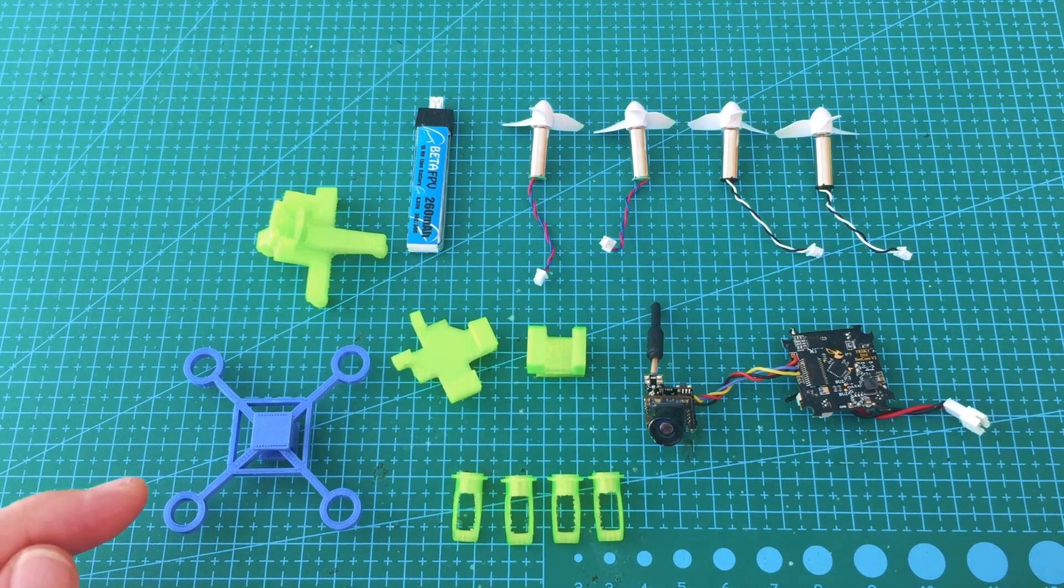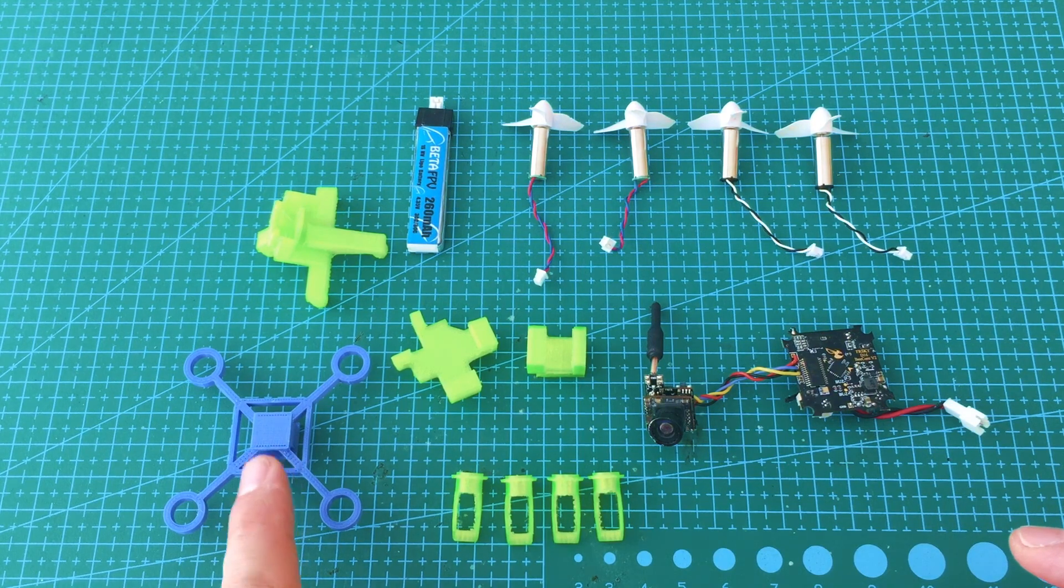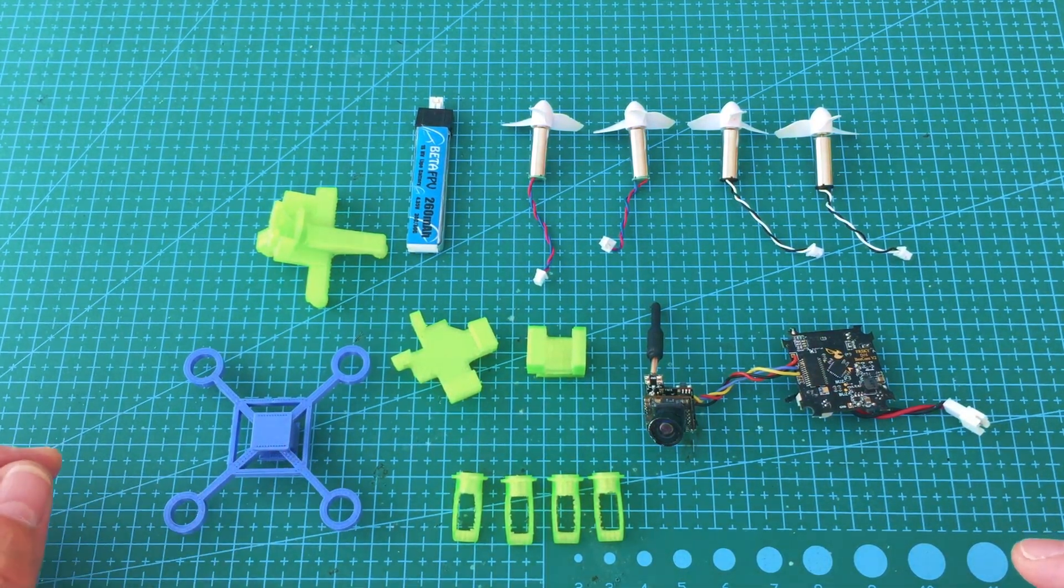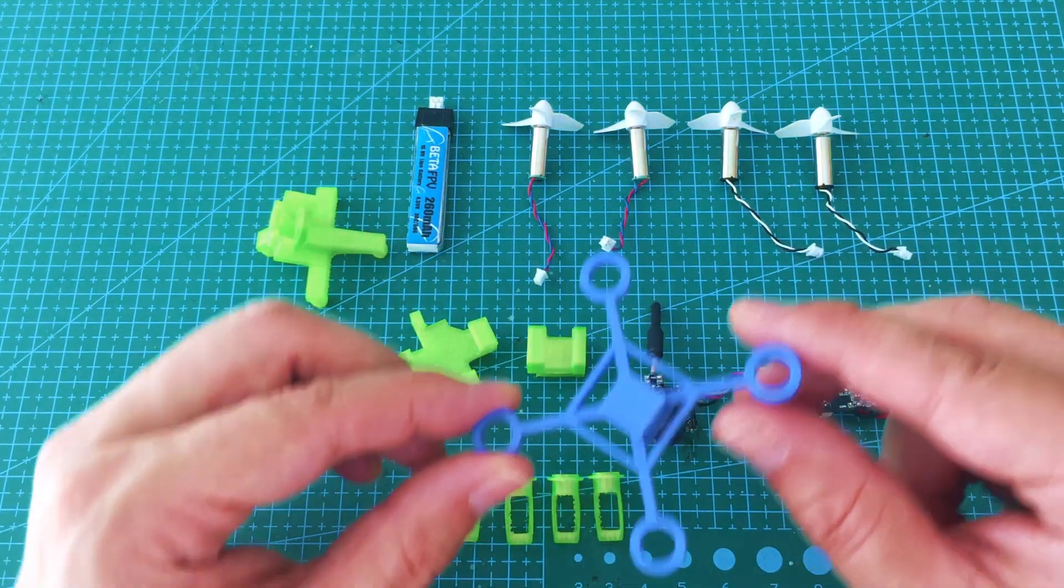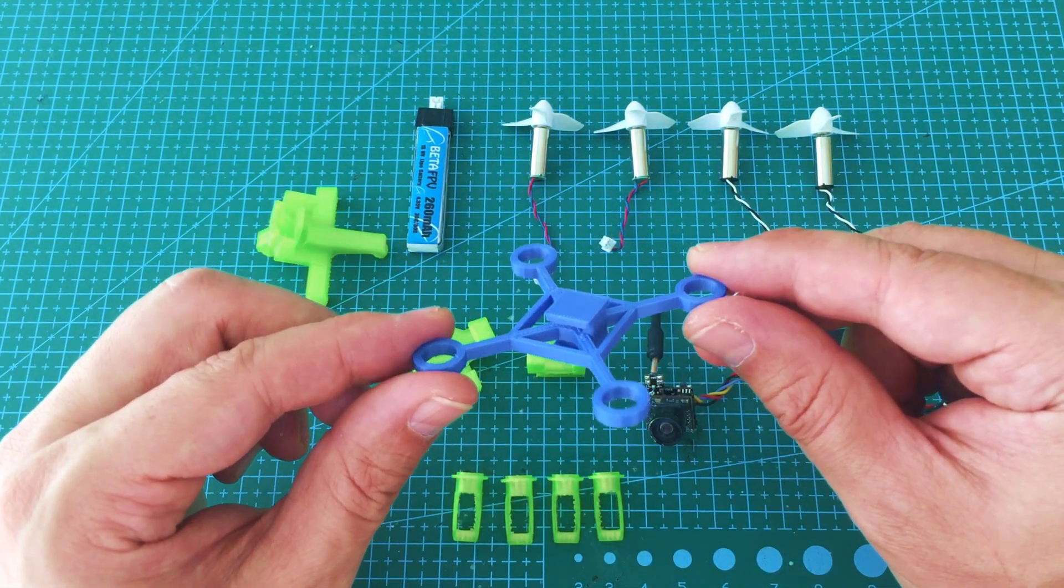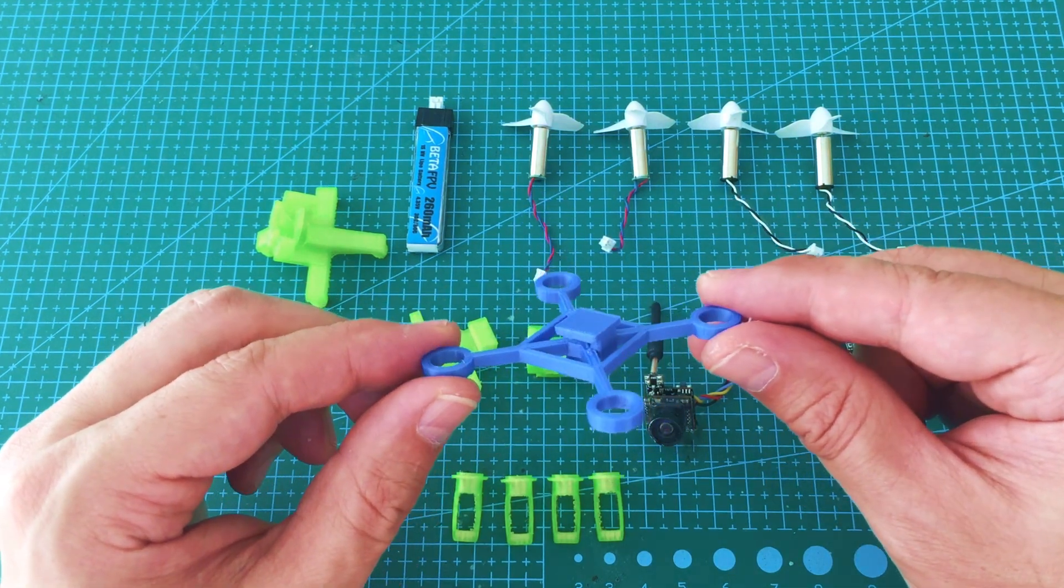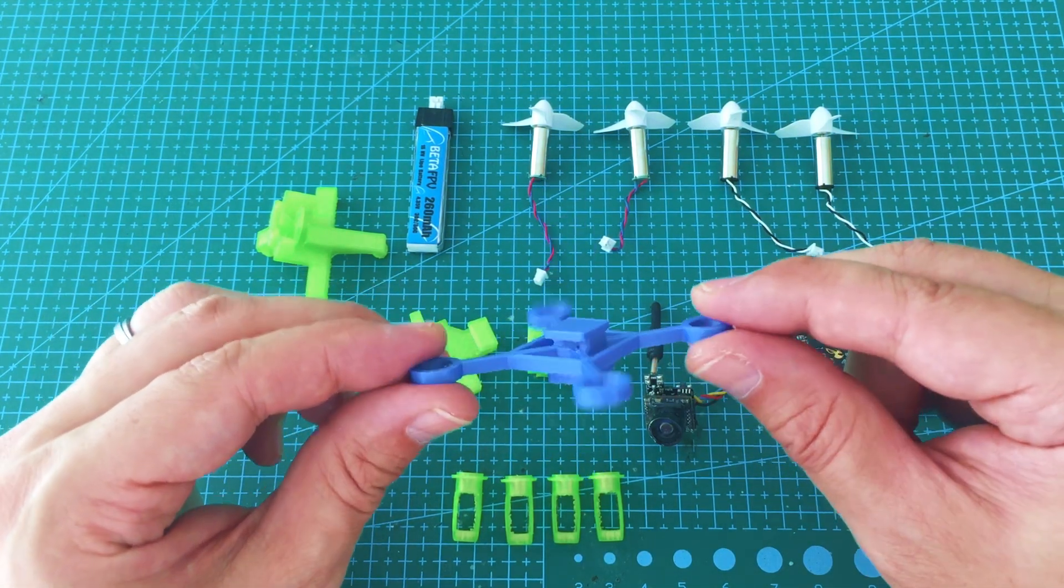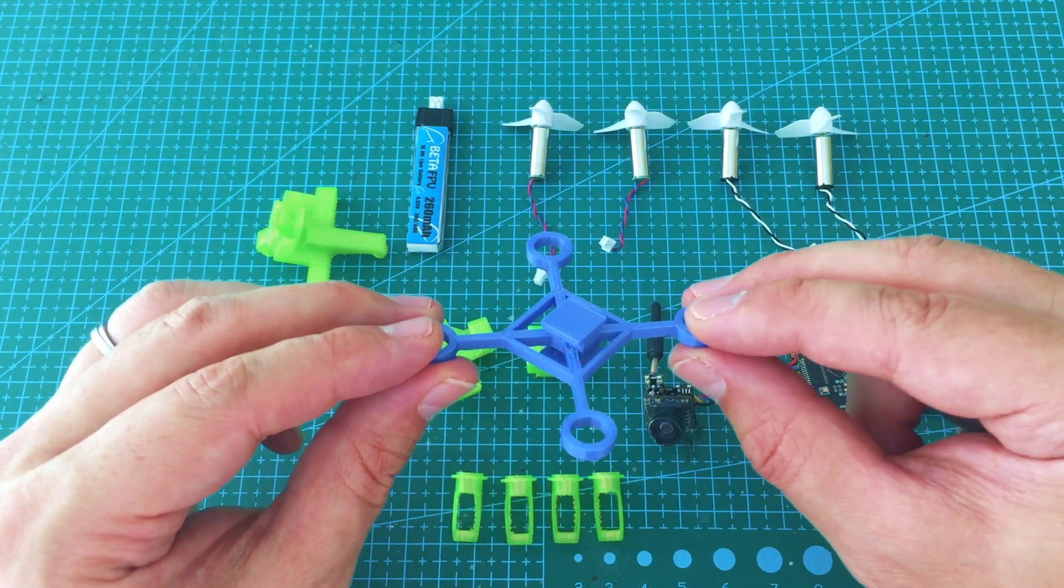Before we put this together there's one important thing that I need to mention. As you can see, these pieces are different materials and that's not just because of the color. So the frame here is printed with regular just PLA. And that's because I want something that's sturdy, that's very rigid and I don't want any deformation.